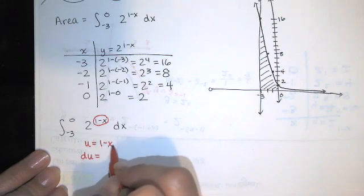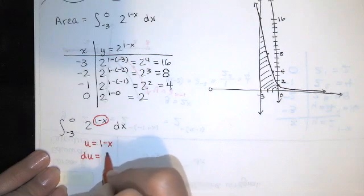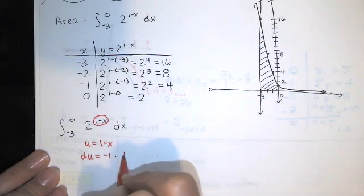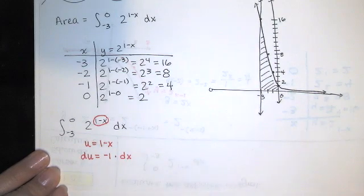Remember how we do that? You take the derivative of this first. Derivative of 1 is 0. Derivative of -x is -1. And then you multiply by dx. So -1 dx is du.